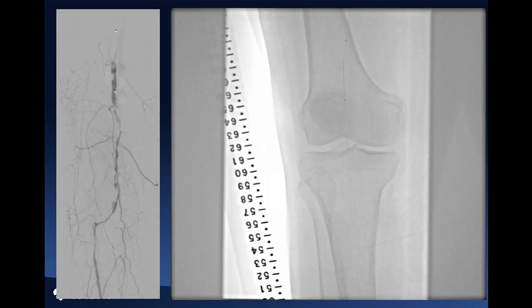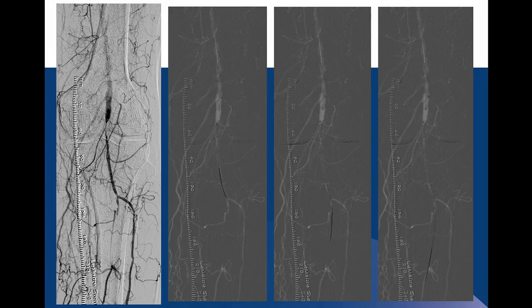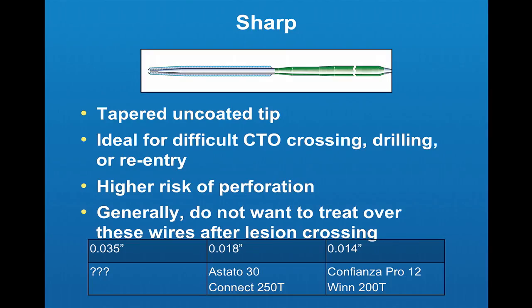Here is another example with a very diffuse lesion that looks like a total occlusion. Very simply, the wire goes down smoothly and you are able to traverse very easily with a slippery wire all the way down — showing that sometimes you think you might need a lot of support or sharpness, but generally a slippery wire is sufficient.